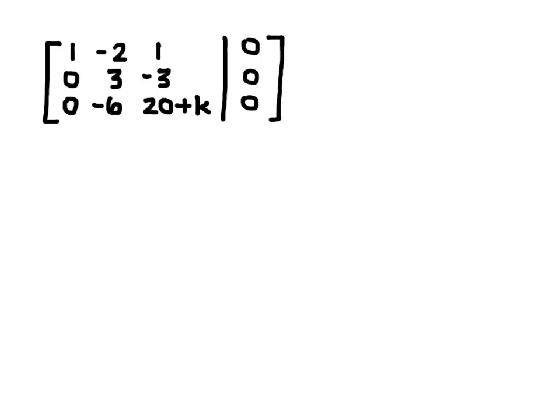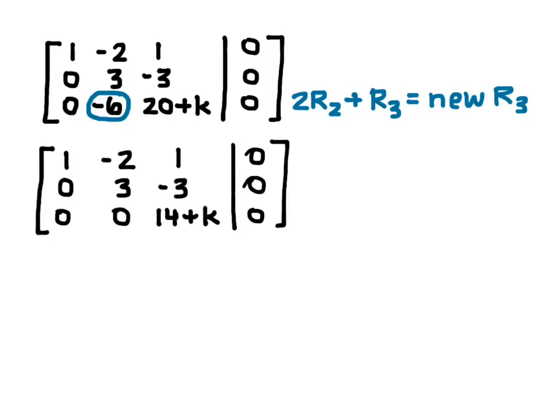The last one that I want to zero out is that negative 6. So I will do 2 row 2 plus row 3 equals the new row 3, and I get the new matrix with row 3 being 0, 0, 14 plus K, and 0.